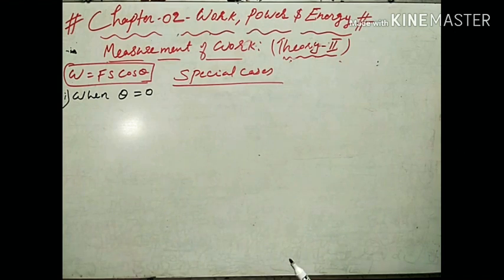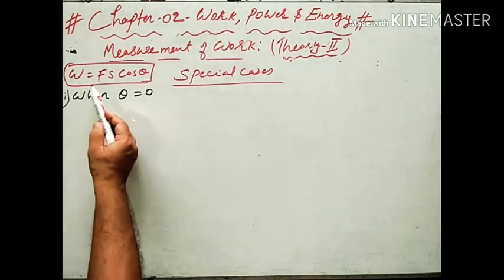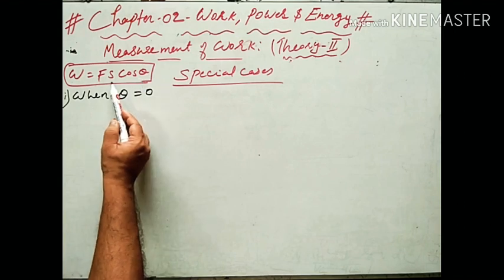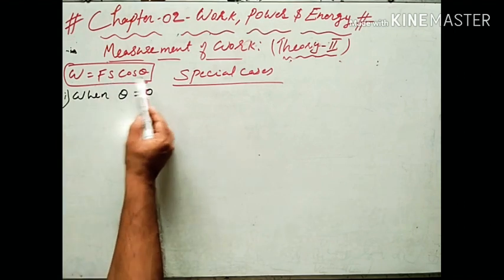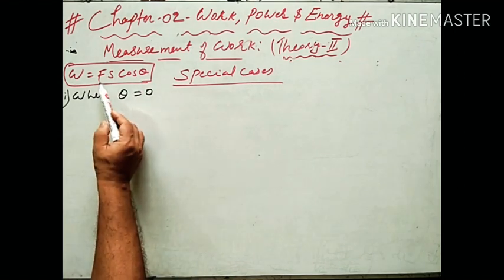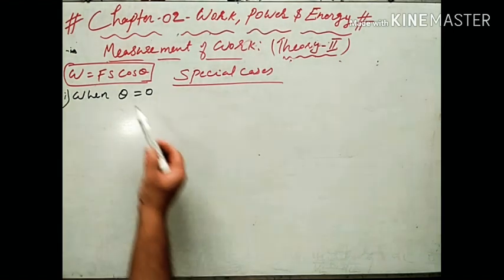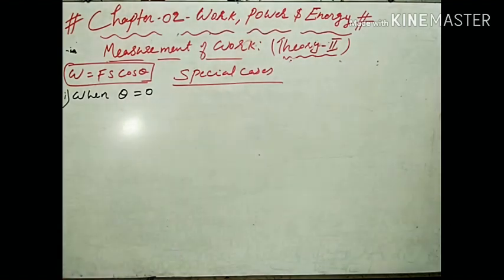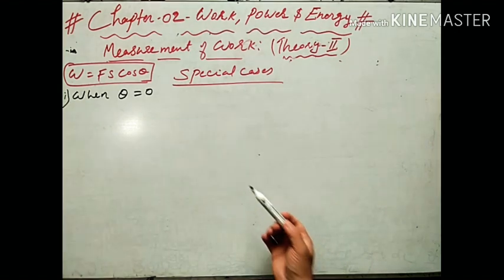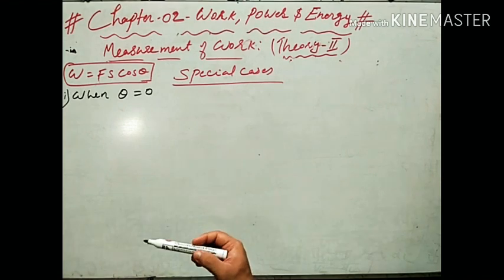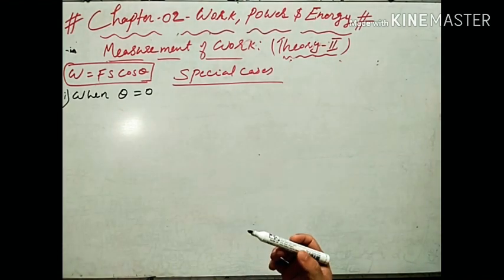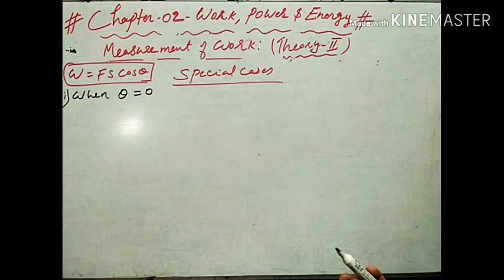Mathematically, work done can be expressed as W equals FS cos theta, where F is the force, F cos theta is the component of force along displacement, S is the displacement, and cos theta is the cosine of the angle between force and displacement. Don't make any mistake while measuring the angle — cos theta is the angle between force and displacement. Let us consider some special cases to connect this equation to day-to-day life.